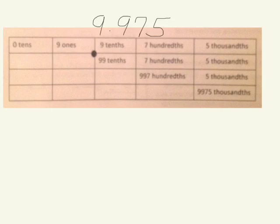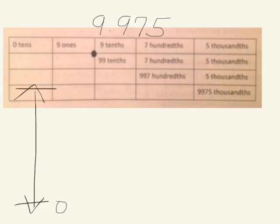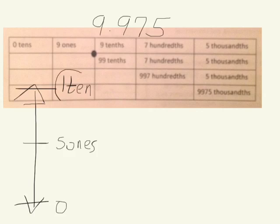We'll begin by rounding this number to the nearest tens place. Our vertical number line shows that we have 0 tens, so our number is between 0 tens and 1 ten. Midway between would be 5 ones. We have 9 ones, which lands above the midpoint. It therefore rounds to 1 ten, or ten in standard form.